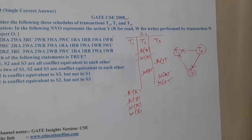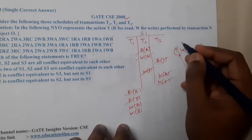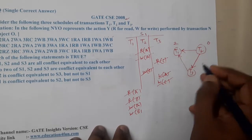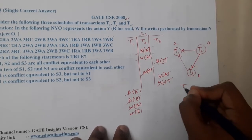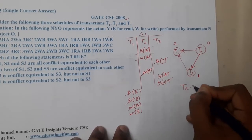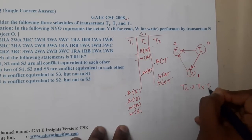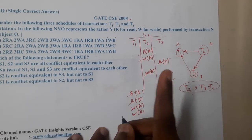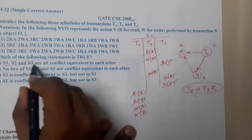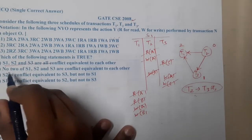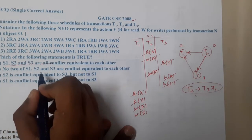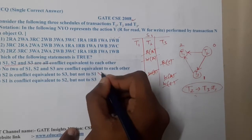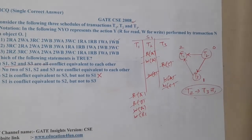By observing the diagram we can conclude: T1 has 2 incoming edges, T2 has 0 incoming edges, T3 has 1 incoming edge. So the serial order is T2, T3, T1. This is the safe sequence order. For S1, it is conflict serializable.